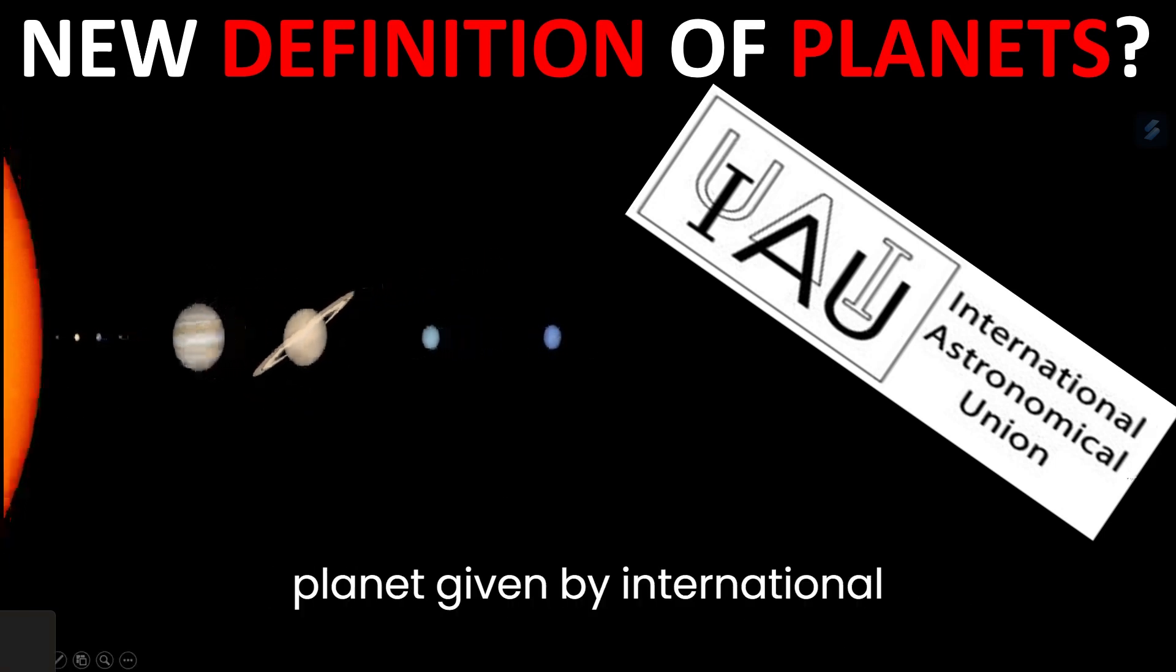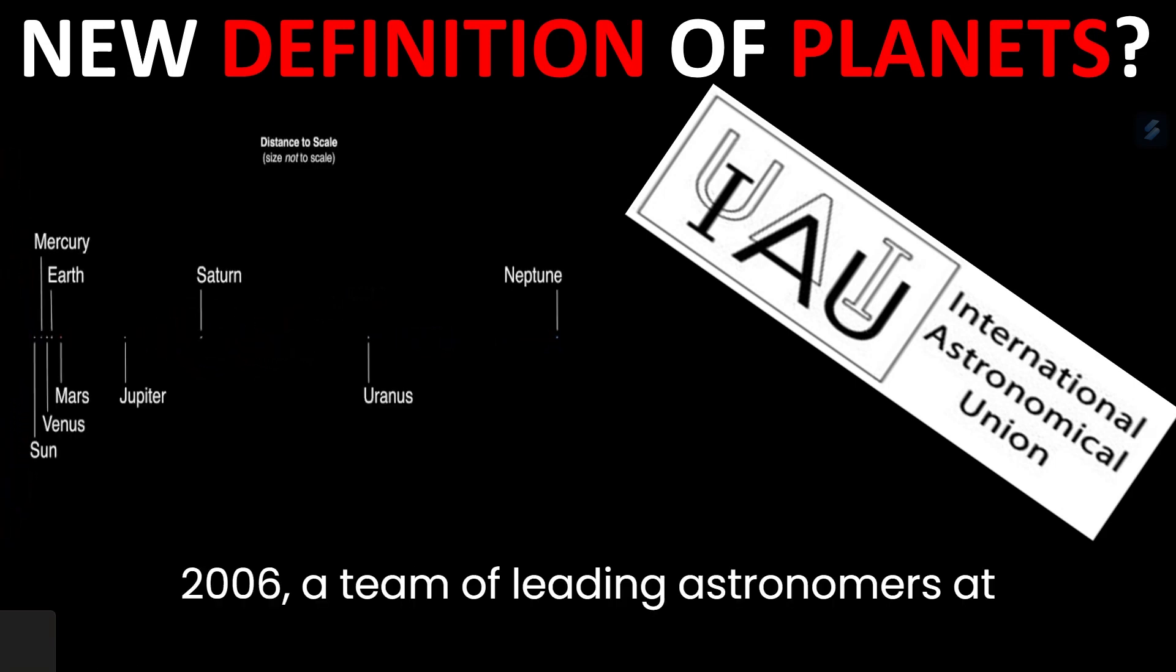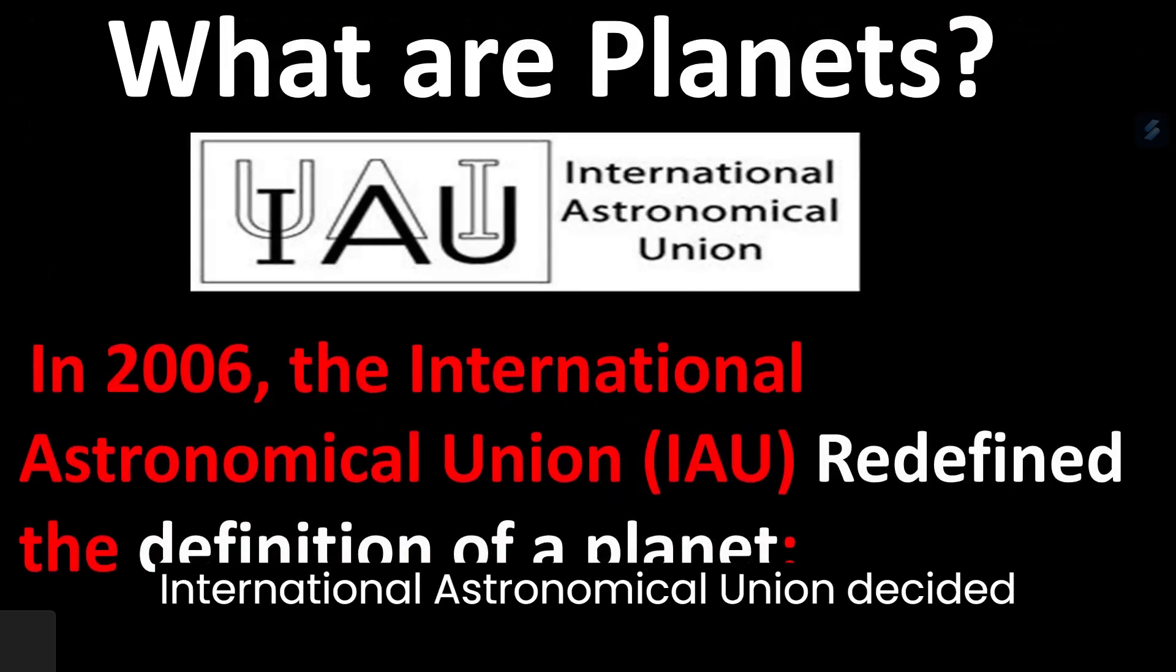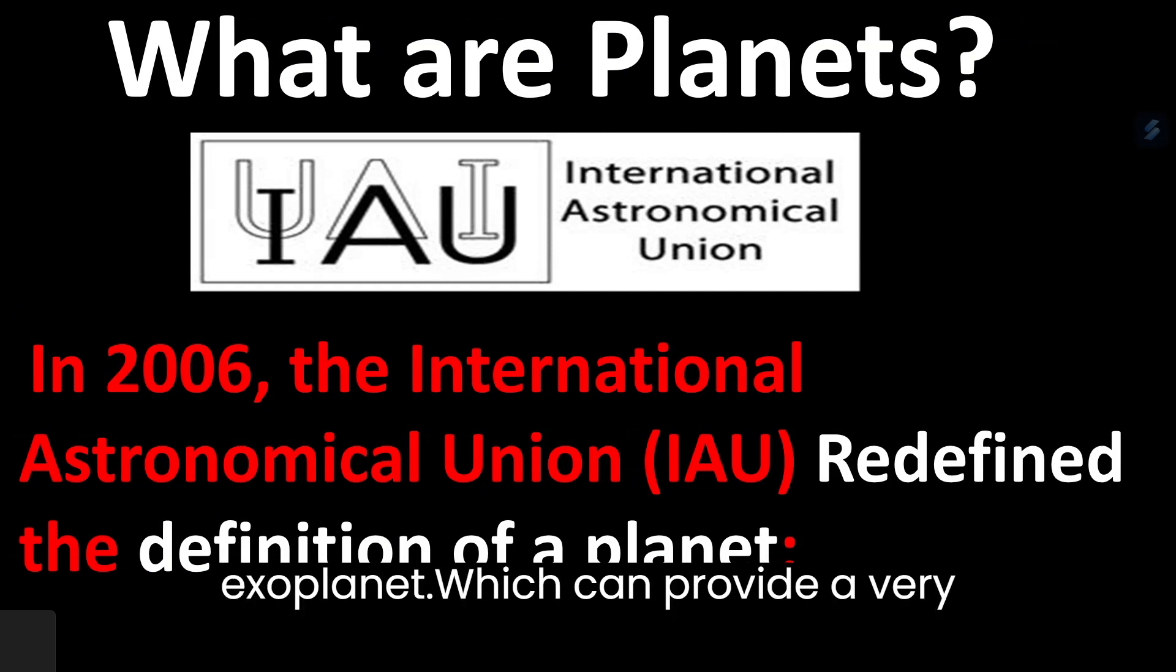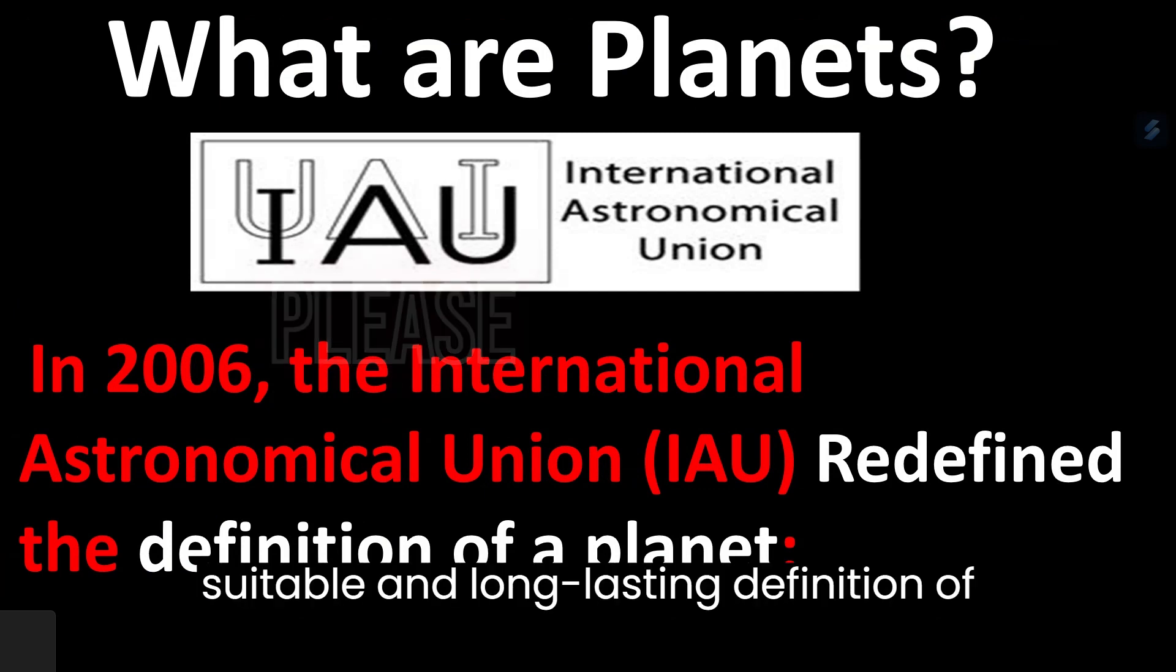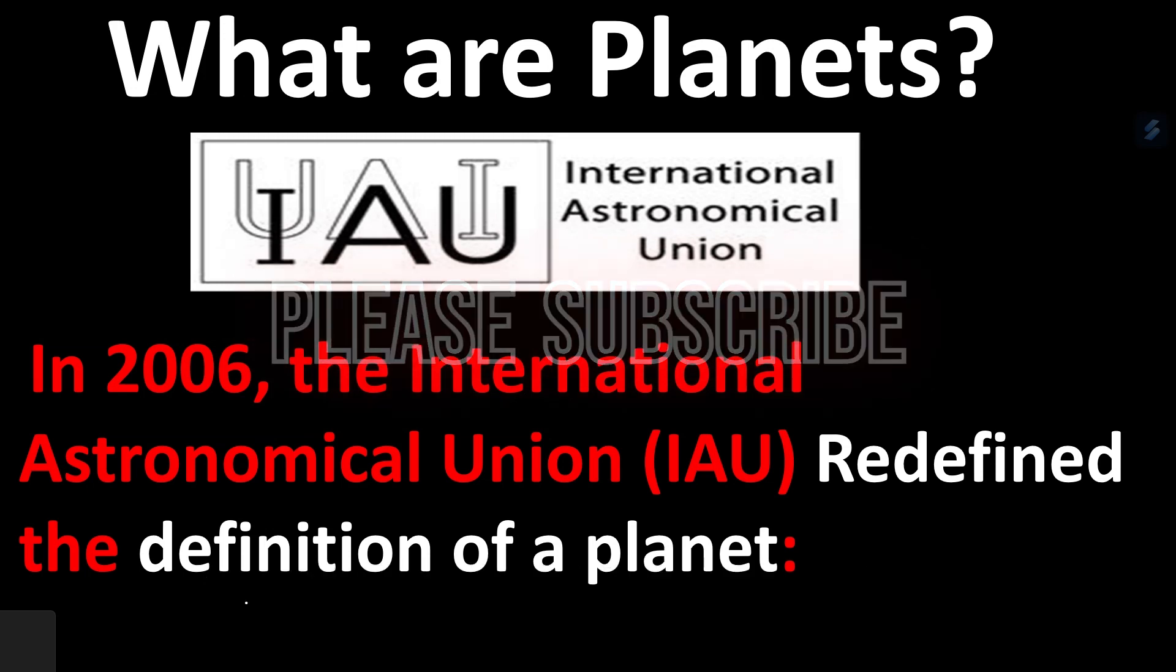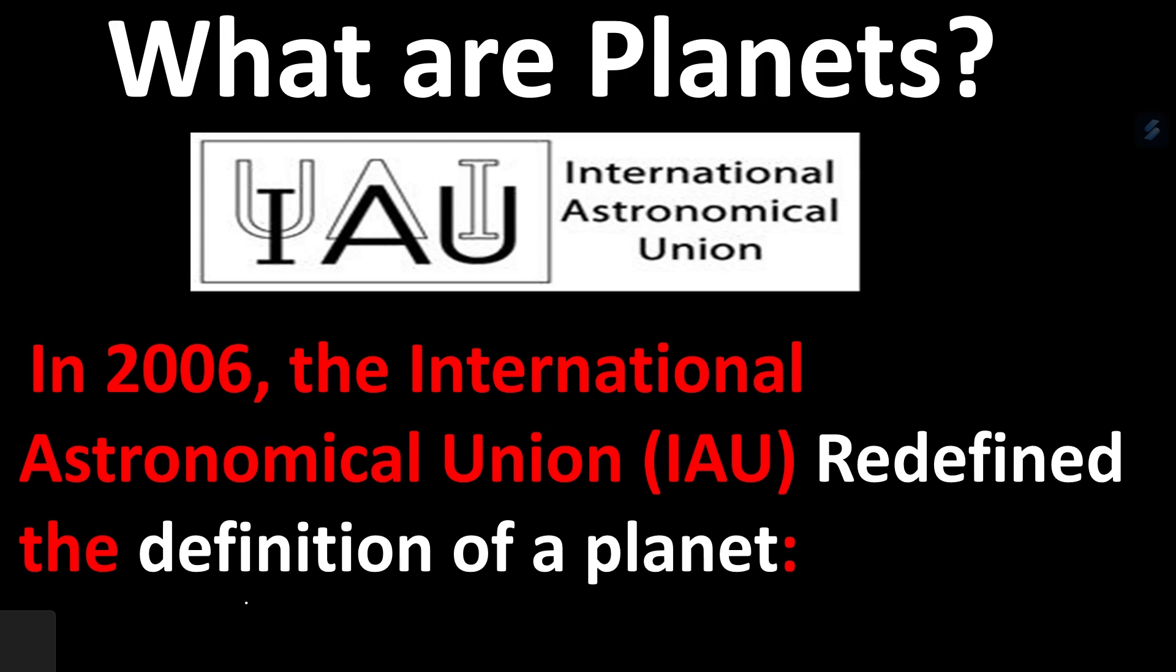In this video, we're learning the new definition of planet given by the International Astronomical Union. In 2006, a team of leading astronomers at the International Astronomical Union decided to give a concrete definition of a planet which can provide a very suitable and long-lasting definition of planets. This definition should be such that too many planets may not demand for level as a planet.